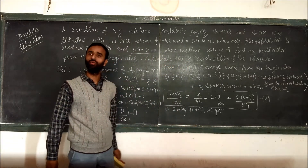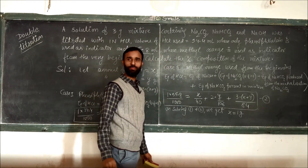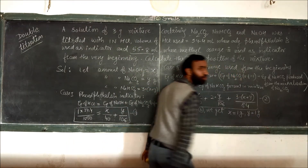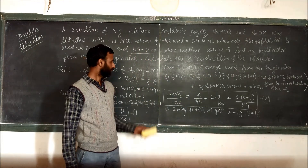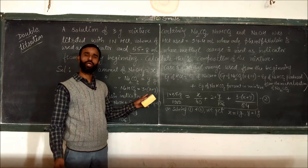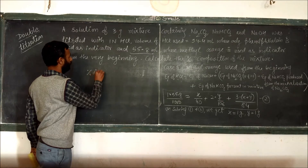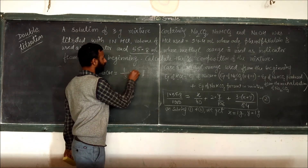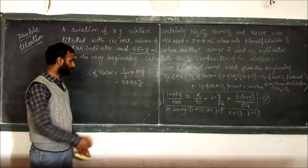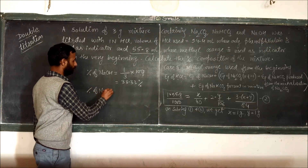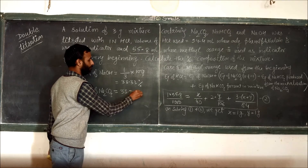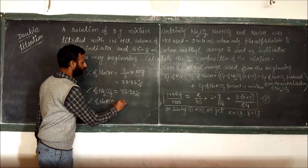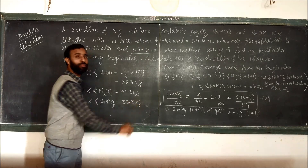Solving equations 1 and 2, we get x = 1 gram (NaOH), y = 1 gram (Na₂CO₃), and therefore NaHCO₃ = 3 − 1 − 1 = 1 gram. The percentage of NaOH = 1/3 × 100 = 33.33%. The percentage of sodium carbonate is also 33.33%, and the percentage of NaHCO₃ is also 33.33%, since all three components are each 1 gram out of 3 grams total.